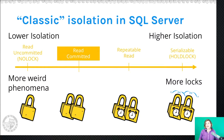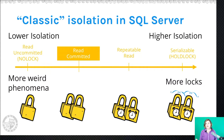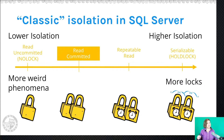The problem with reading uncommitted data is it may never be committed — it may be rolled back. There may be a batch of data going into the database and then a problem happens and the entire thing is rolled back, so that data just isn't there anymore. If I'm reading uncommitted data, I'm going to return information to my users that isn't even a fact because it hasn't been committed. Read Committed is safer than that, but that's one of the few things you can really say for it — it's not as crazy as Read Uncommitted.